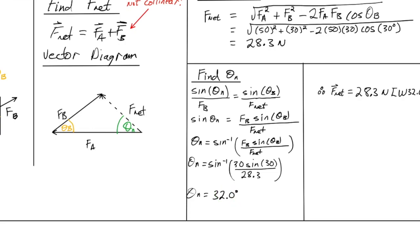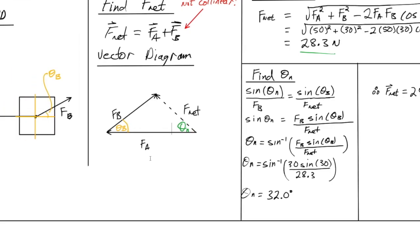And therefore, our Fnet is equal to 28.3 Newtons, which is our magnitude, and a direction of west, 32 degrees north. Because if we look at our Fnet, it goes west and rotates to the north. And if we take a look over here on the diagram, we can see that Fnet is 32 degrees north of this west line. Or west, rotate 32 degrees north. And that should be enough to get you started.